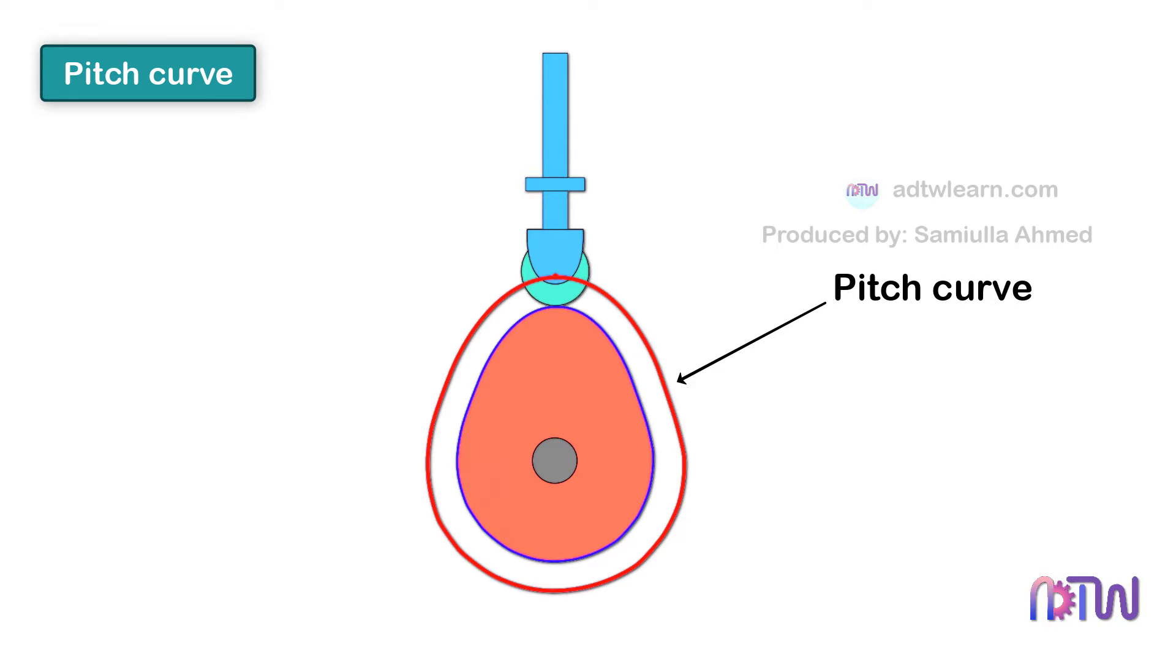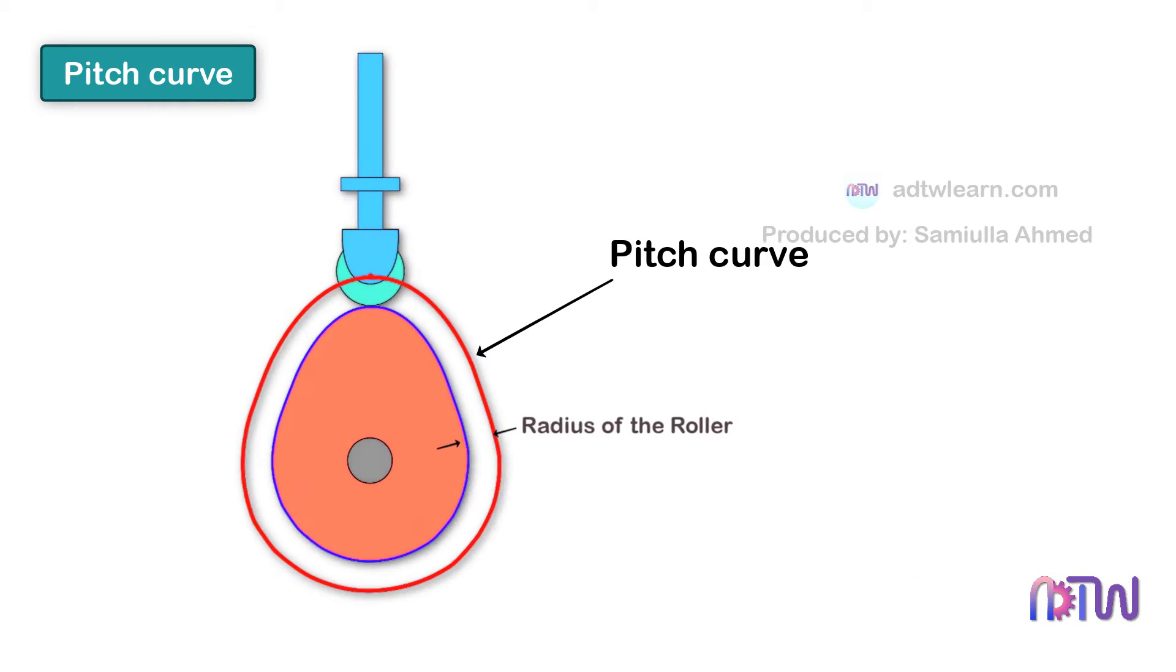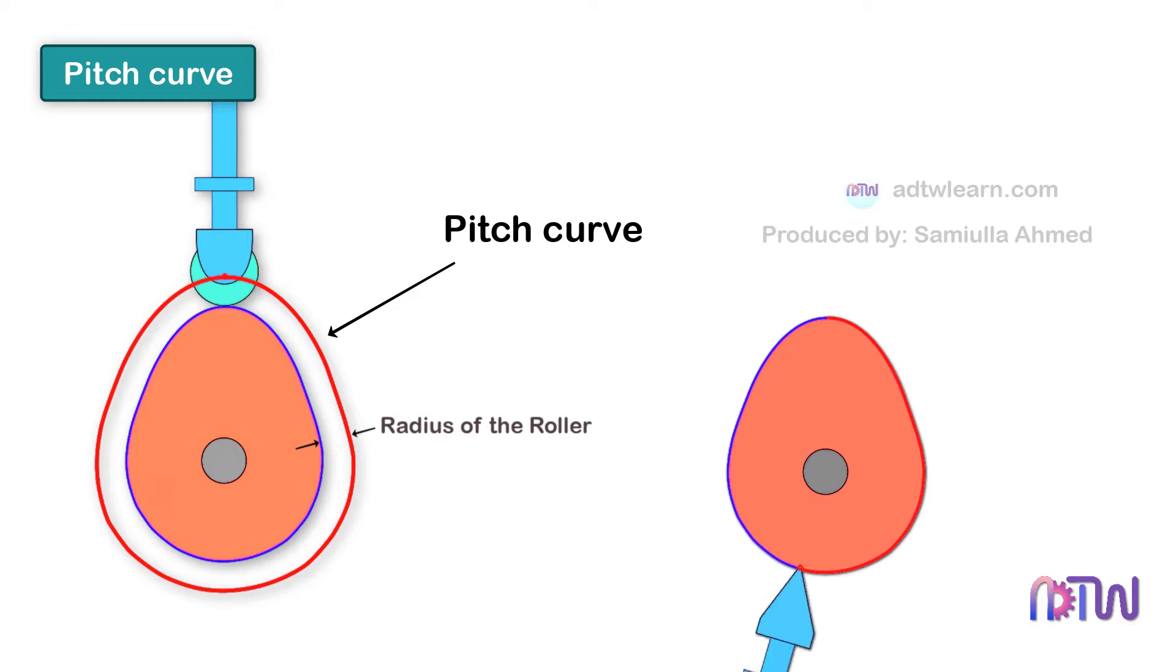In the case of the roller follower, the Pitch Curve is away from the cam profile at a distance equal to the radius of the roller. For a knife edge follower, the Pitch Curve is the same as the profile of the cam.